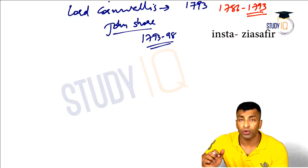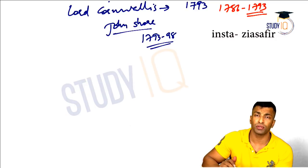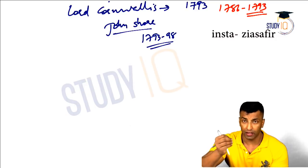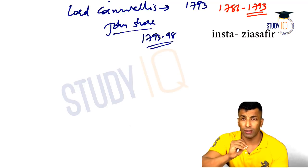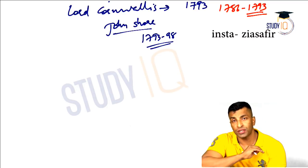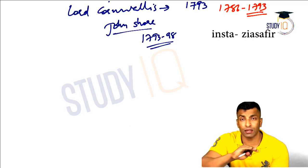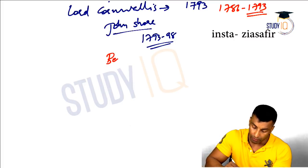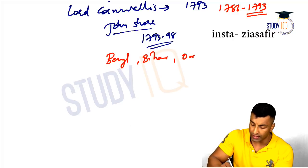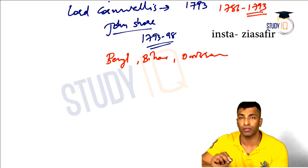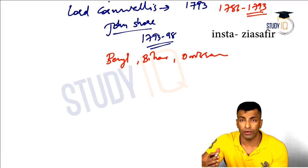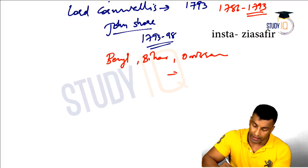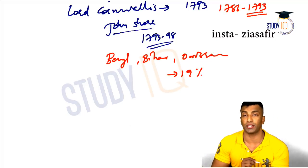Permanent settlement was introduced by Lord Cornwallis as Governor General of Bengal — so in the eastern part of India: Bengal, Bihar, Orissa, and some parts of Tamil Nadu and Banaras. It comprised 19% of British India, meaning 19% of the area under British control at that time.